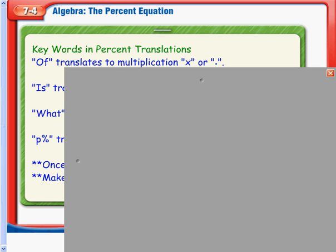Right here on the board we have of, is, what, and p% that is all that is revealed to us. From previous lessons, we should remember that of is going to mean multiplication. From 7-1, we were told several times, of means multiplication.